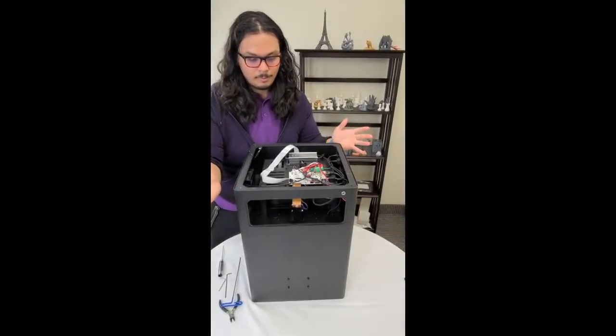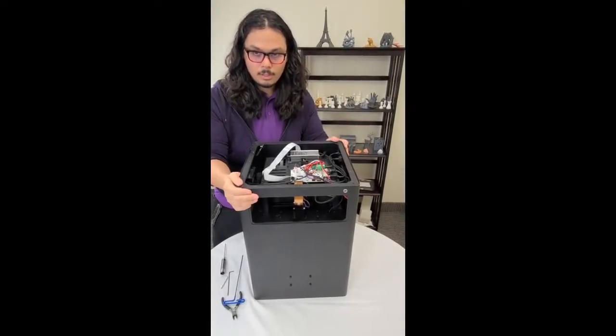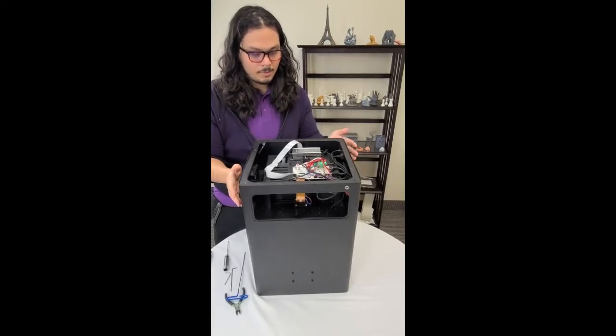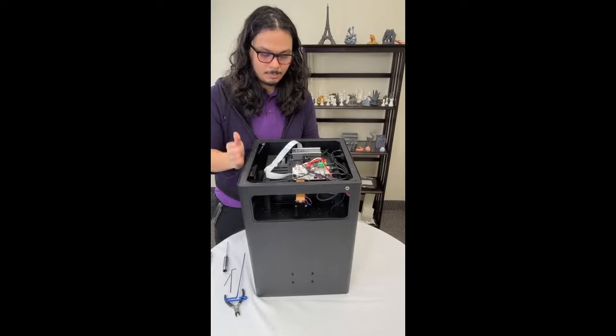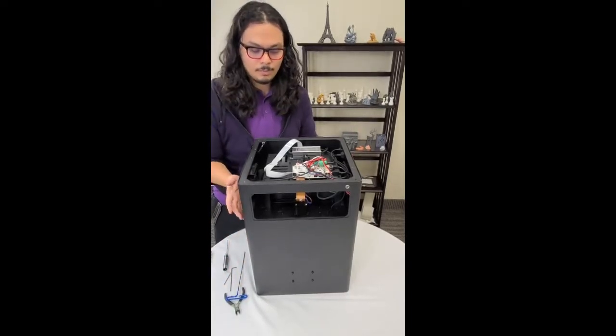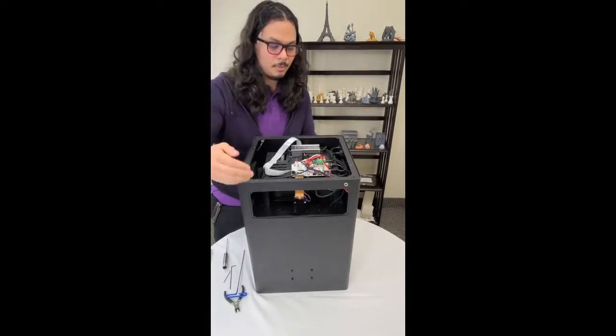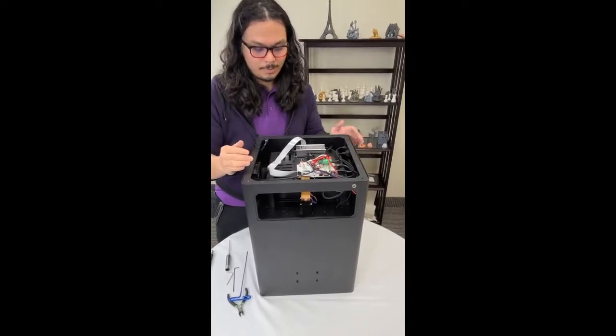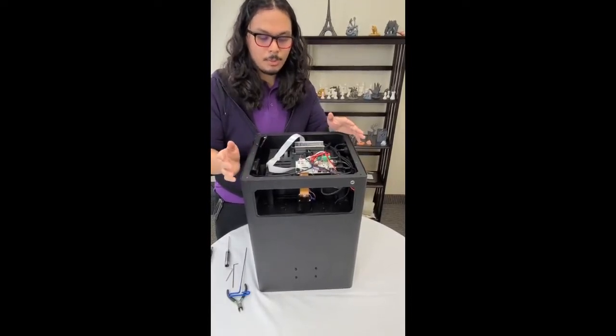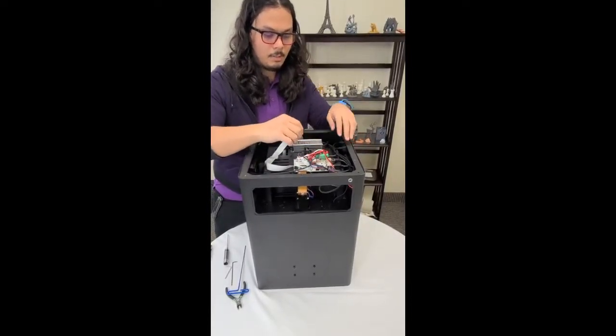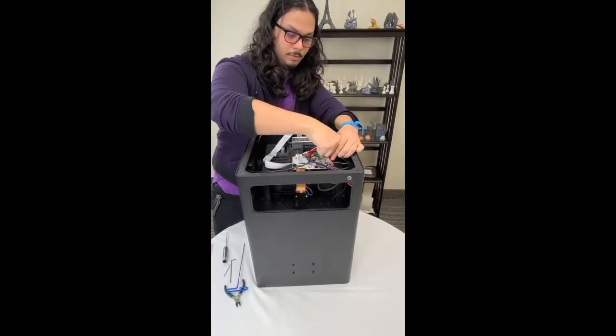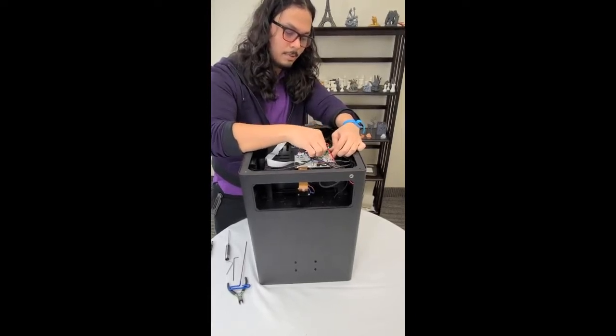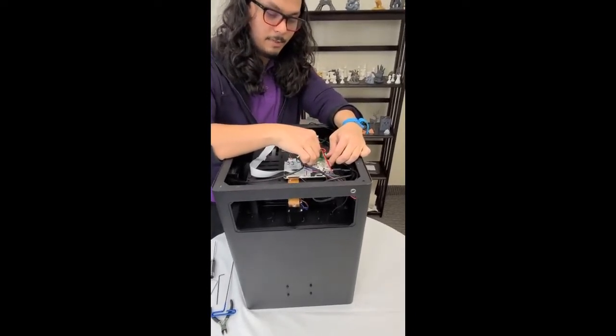So for this part, we're just going to be uninstalling the old light source now. First things first, you're going to want to probably just flip the printer on its top or you can set it on its back if you'd rather do that. For this purpose, we're just going to flip it on its top. First things first, you're going to want to start unplugging everything on the mainboard. So there's going to be a lot of red glue, more than likely when you open this up. So you're going to need to scrape that off first.